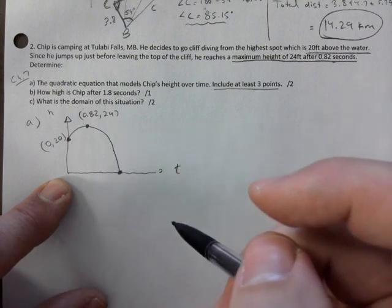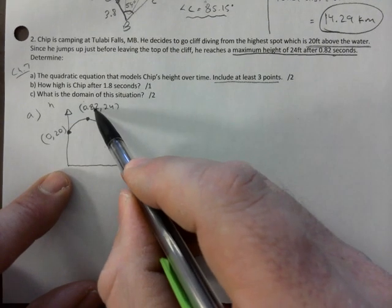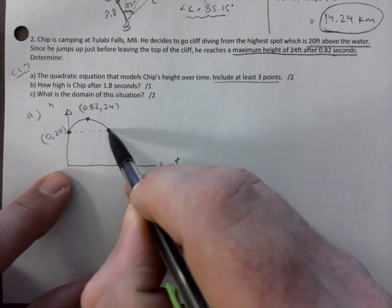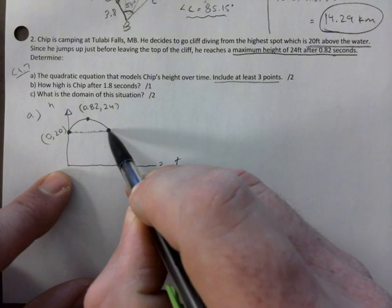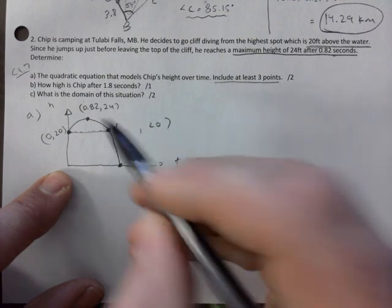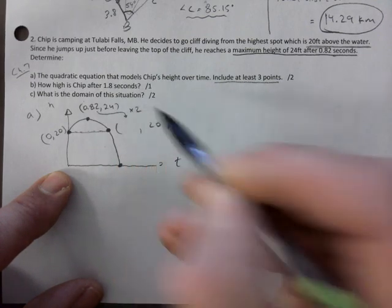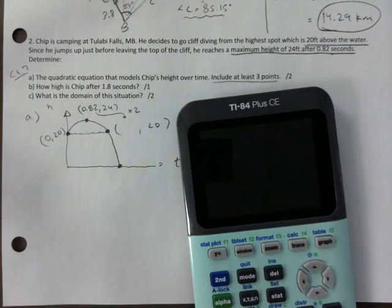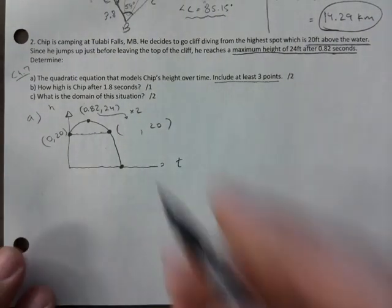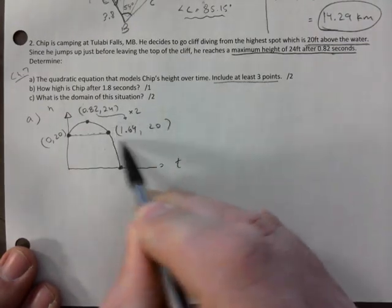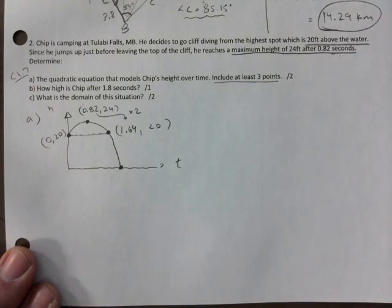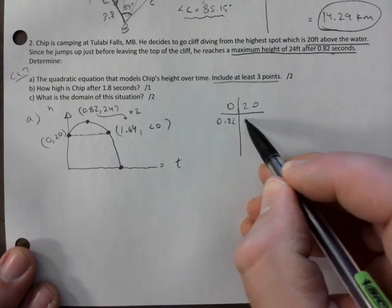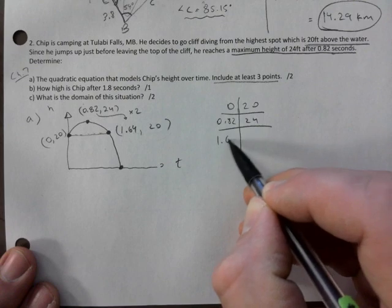So at time zero, you're at a height of 20 feet. So that's 0, 20. Then our maximum height is 0.82, 24. Biggest mistake times two. You've got to be in line where you started and get this point. So that's 20. We have to multiply it by 2 in this case. And that is 1.64. That is really worth one full mark if you have that. So you set them up. 0, 20, 0.82, 24, and 1.64, 20.